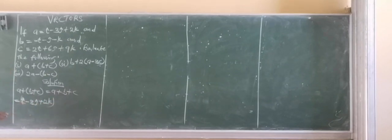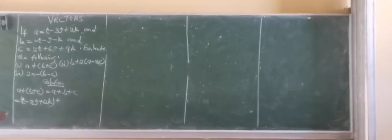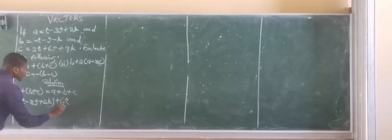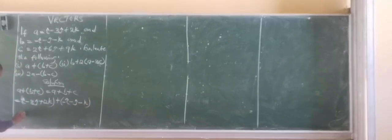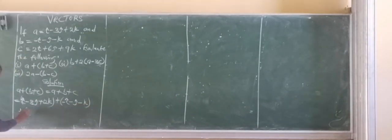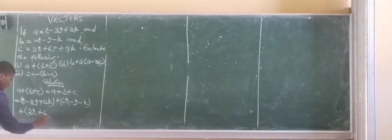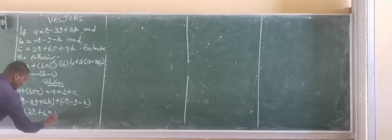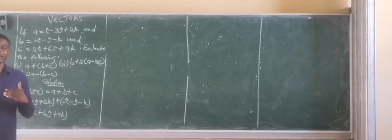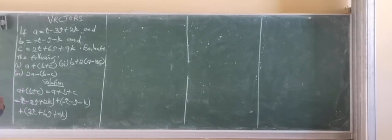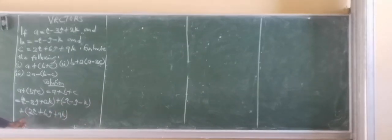So this is vector A, plus vector B. Vector B is simply minus I minus J minus K. And then finally plus vector C is 2I plus 6J plus 9K. Now, you can only add vectors when they move in the same direction. So if they are not moving in the same direction, it's very much impossible to add them.